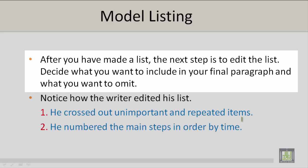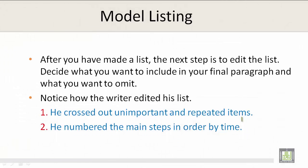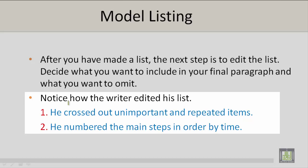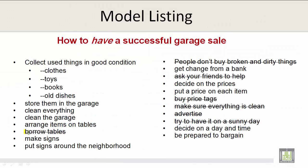After you've made a list, the next step is to edit the list. Decide what you want to include in your final paragraph and what you want to omit, which means not include. Notice how the writer edited his list. One, he crossed out unimportant and repeated items. And two, he numbered the main steps in order by time. Items such as borrow tables, people don't buy broken and dirty things, ask your friends to help, buy price tags, make sure everything is clean, advertise, and try to have it on a sunny day have been crossed out.